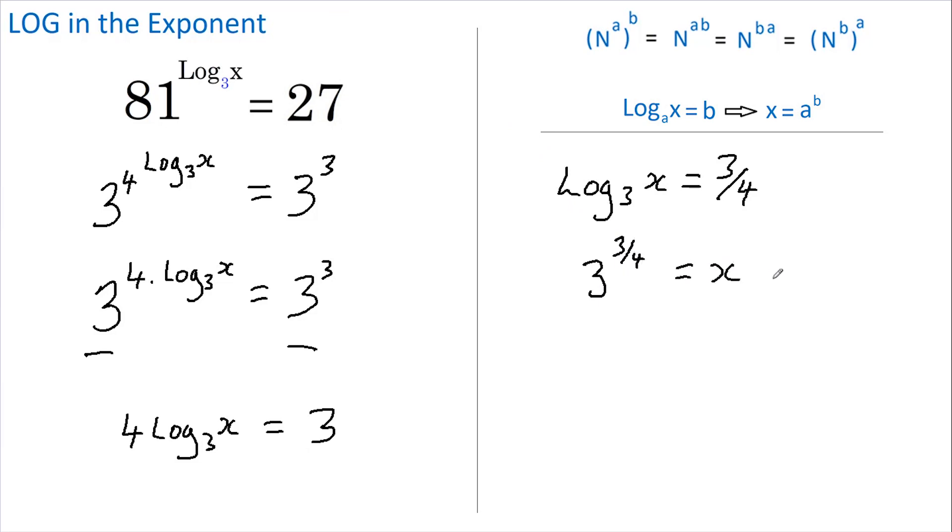Therefore x equals 3. Now I'm going to write this as to the power of 3 multiplied by a quarter, so I can now rewrite this as 3 to the power of 3 is 27.